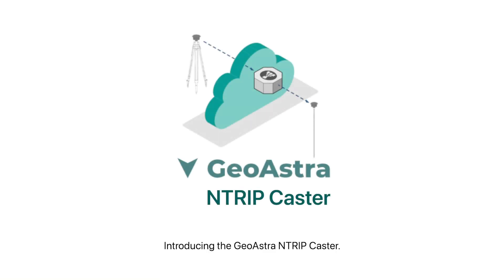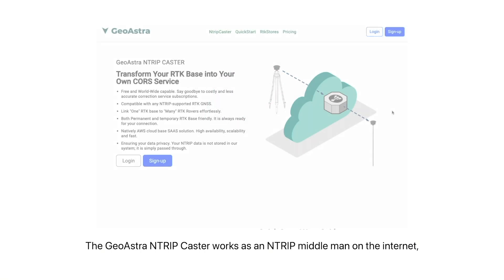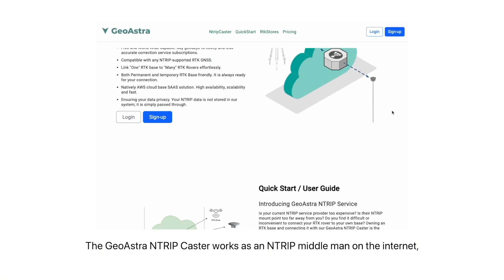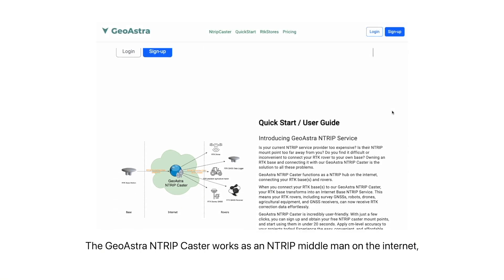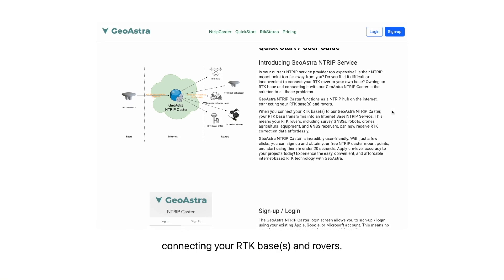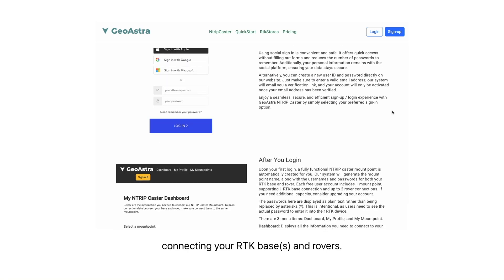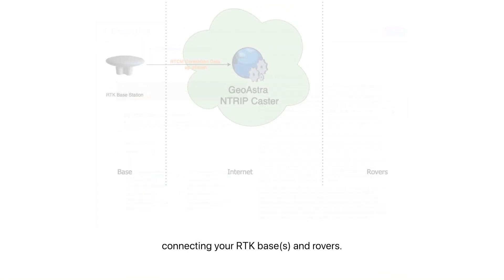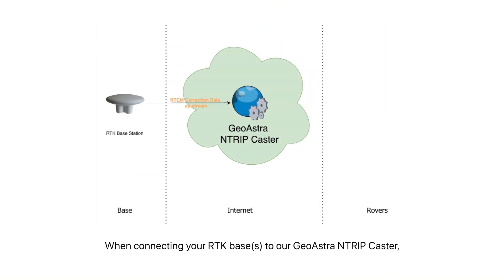Introducing the GeoAstra Ntrip Caster. The GeoAstra Ntrip Caster works as an Ntrip middleman on the internet, connecting your RTK bases and rovers. When connecting your RTK bases to our GeoAstra Ntrip Caster, your RTK base transforms into your own internet core service.